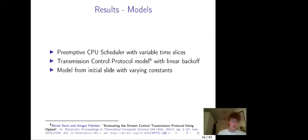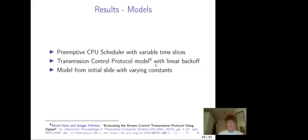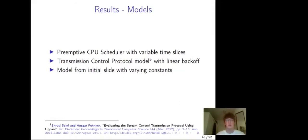As an example we have the TCP (Transmission Control Protocol) model from Signy and Tripakis. The TCP specification requires exponential backoff, but what we find is that exponential backoff cannot be modeled with linear relations — only linear backoff can be modeled in this setting.